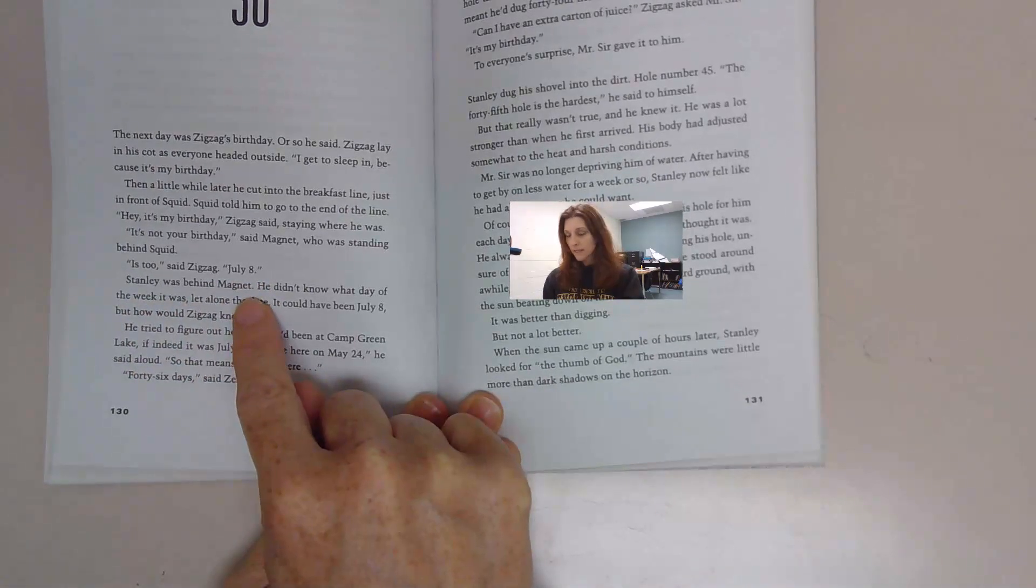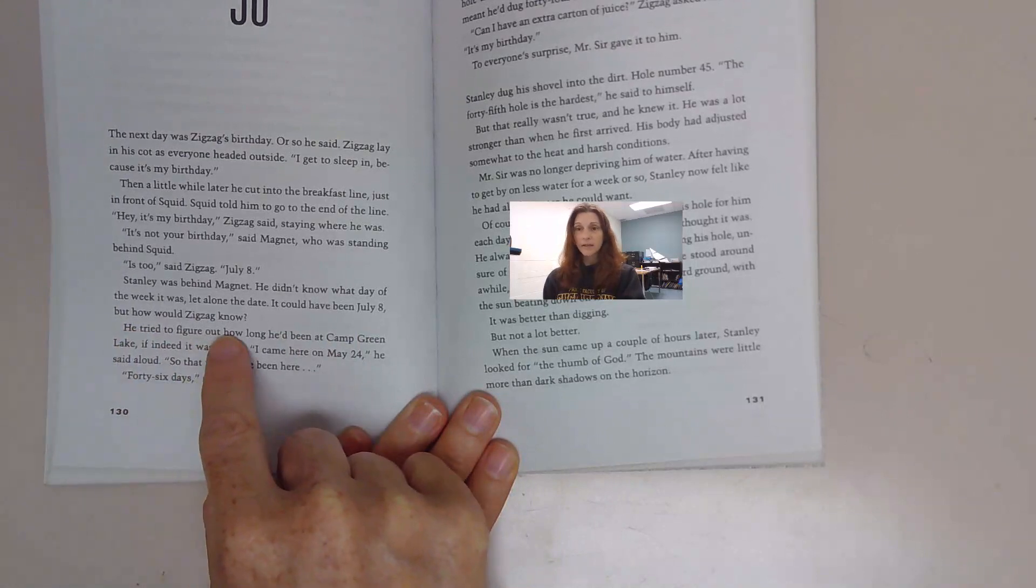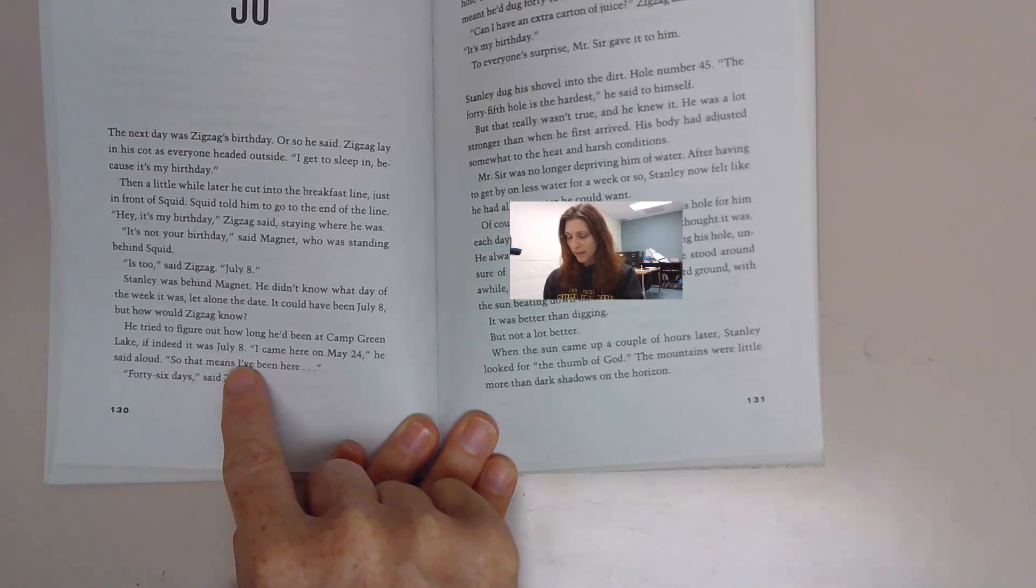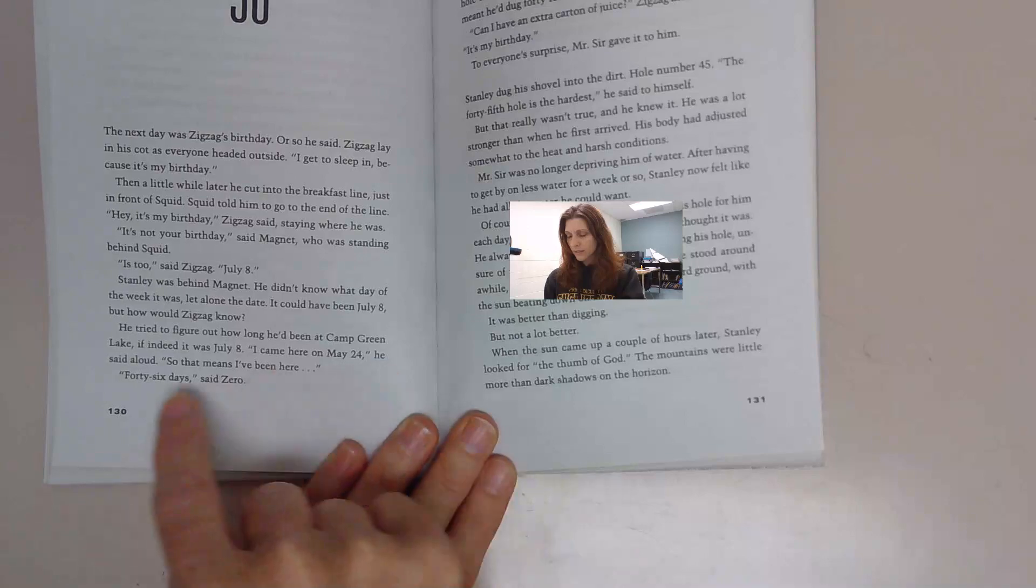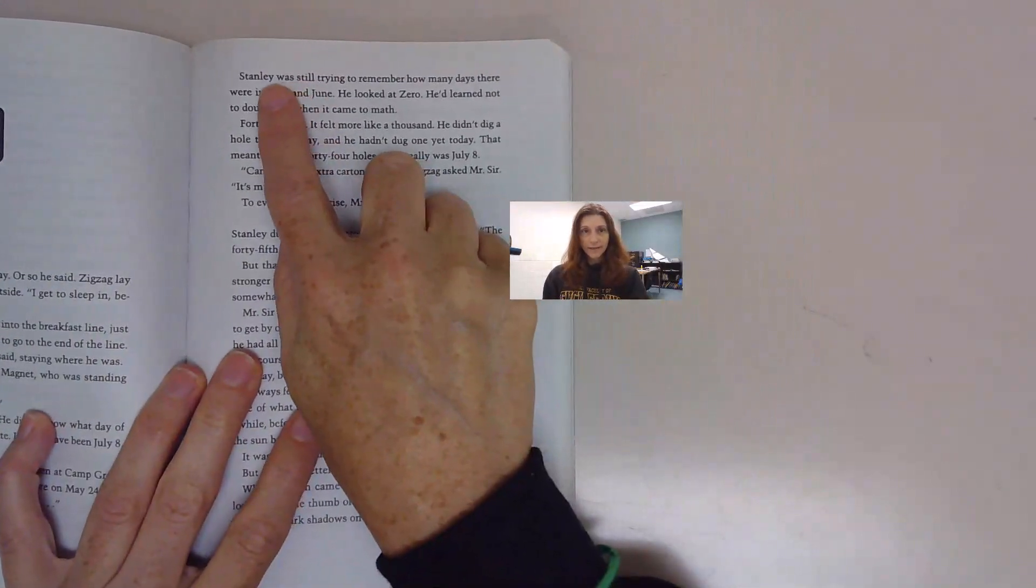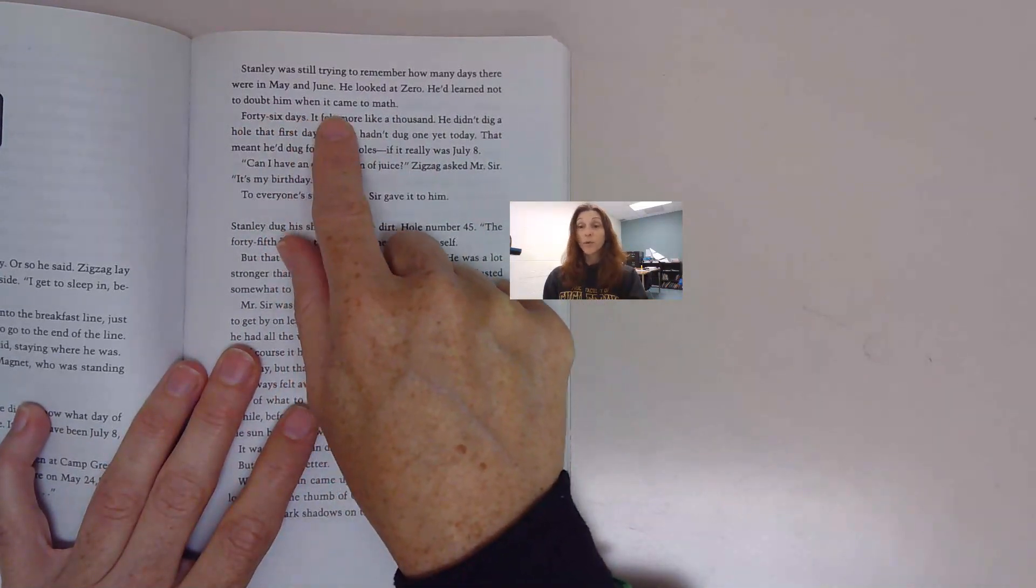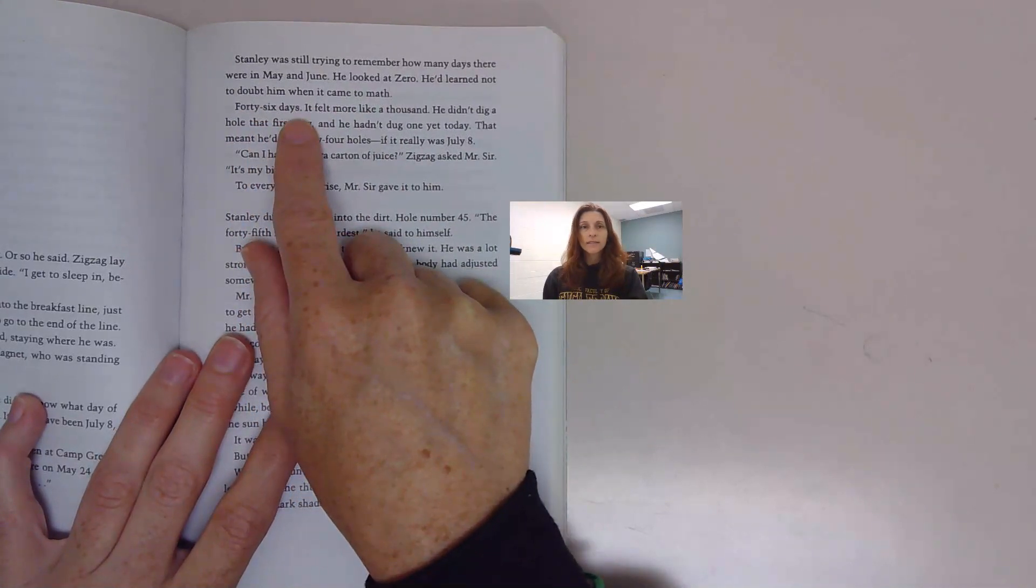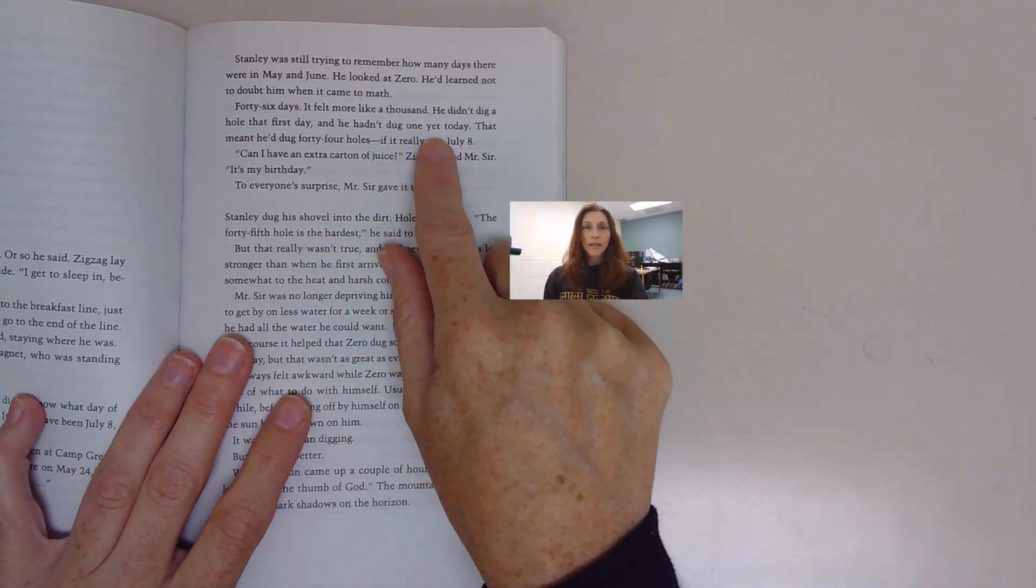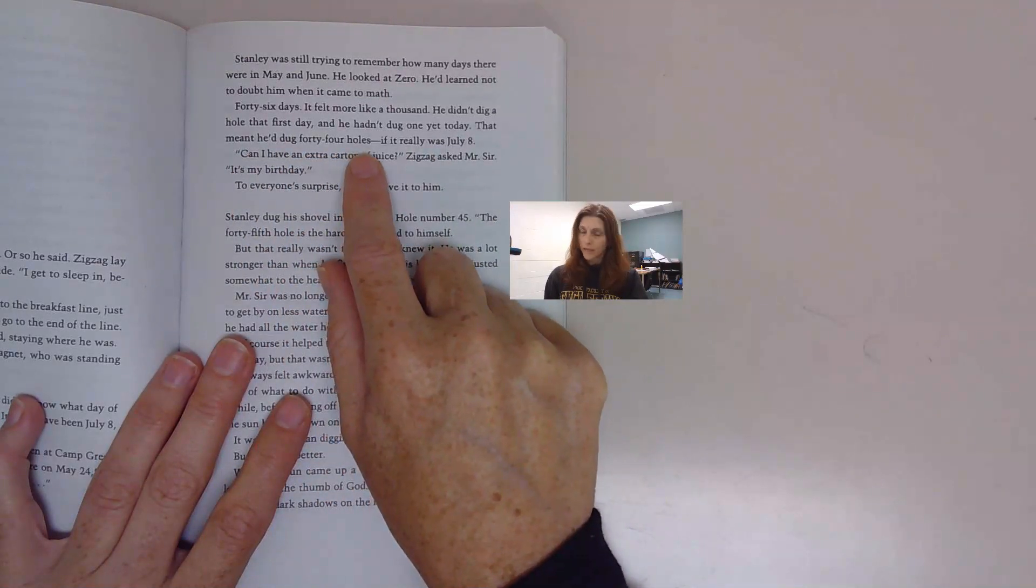Stanley was behind Magnet. He didn't know what day of the week it was, let alone the date. He tried to figure out how long he had been at Camp Green Lake. I came here on May 24th, he said out loud. So that means I've been here 46 days, said Zero. Stanley was still trying to remember how many days there were in May and June. He learned not to doubt him when it came to math. 46 days. It felt more like a thousand.